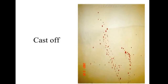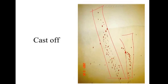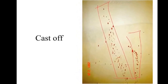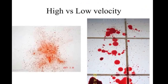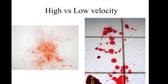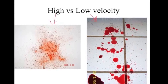A cast-off is when someone is stabbed with a knife and then the knife is quickly retracted, flinging blood in a linear pattern. You may have seen this if you ever flicked a toothbrush at a mirror — it results in a linear cast-off pattern. High velocity is like the result of a gunshot, producing a misted type of blood spatter. Low velocity would be like a bloody nose or a stomach wound — someone stabbed in the stomach with blood dripping.